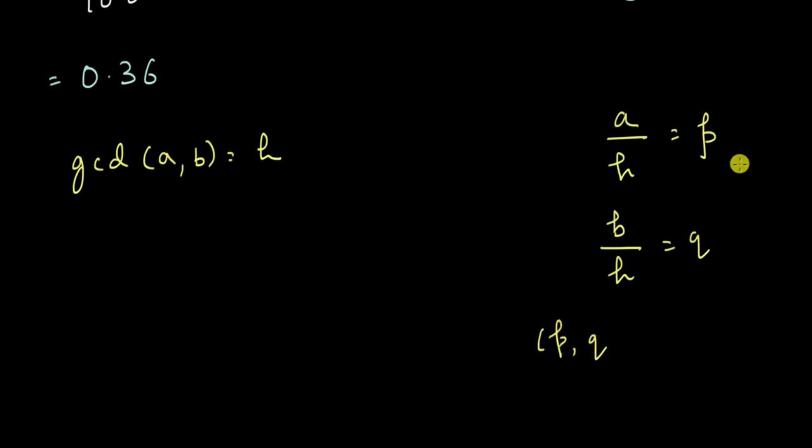The property of p and q will be that they are co-primes. That they will have no other factor in common. Because if they did, then a and b would have a higher factor than h in common. But that is not the case. h is the highest common factor. So therefore, p and q are co-primes.